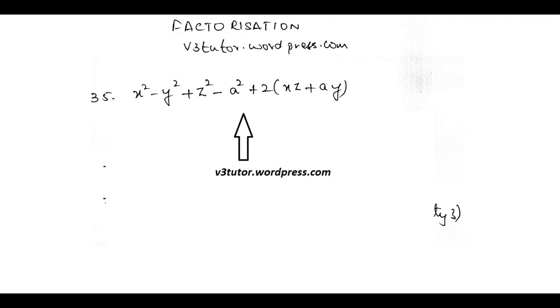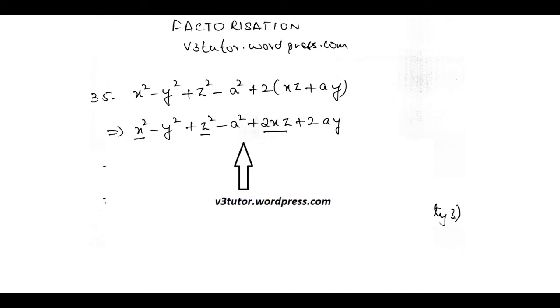The next problem is X squared minus Y squared plus Z squared minus A squared plus 2 into XZ plus AY. Now this corresponds to problem number 35 in the factorization workbook. So how do we start this? This time I am not going to give you repeated and step-by-step solution. Since now you are comfortable with the problems, you will have to figure out certain things. So what I will do is I will group X squared minus Y squared plus Z squared minus A squared. I am going to remove this bracket here and write it as 2XZ plus 2AY. Don't forget this sign—plus into plus is plus.